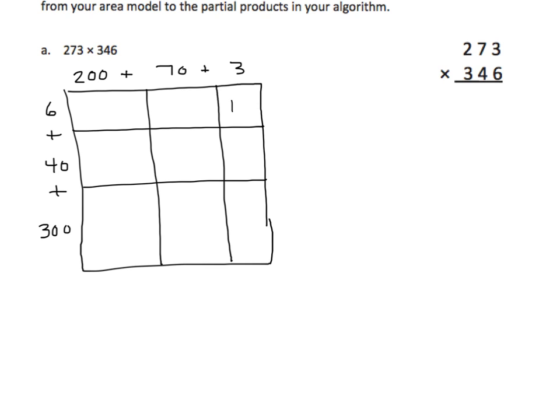Three times six is eighteen. Six times seven tens is forty-two tens. Six ones times two hundreds is twelve hundreds, or one thousand two hundred. Let's go on to the next place. Four tens times three is twelve tens, or one hundred twenty. Four tens times seven tens is twenty-eight hundreds, or two thousand eight hundred. And four tens times two hundreds is eight thousands.